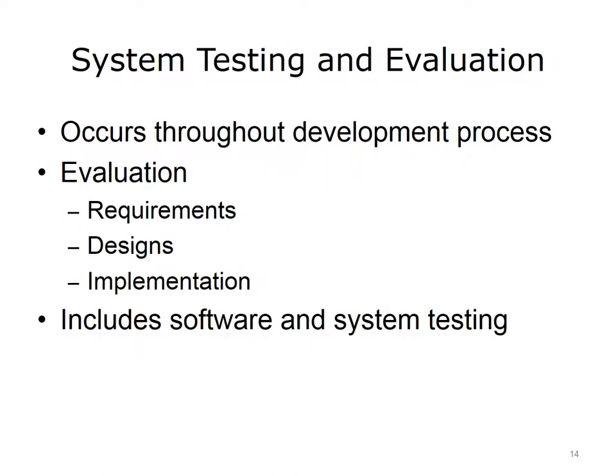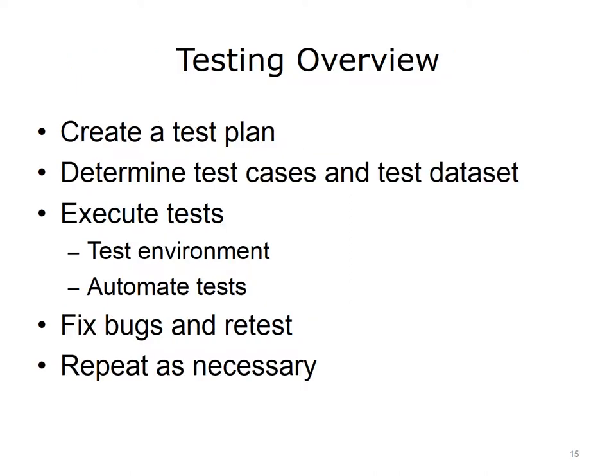Testing and evaluation of an information system's performance occurs throughout all stages of its development. In the beginning, the project is evaluated for feasibility. As the development process continues, requirements are evaluated for completeness and appropriateness. The designs are evaluated using simple prototypes. Most system development methodologies used today require iterative development with repetitive testing and evaluation at each stage. After the system is implemented, the software and the entire system can be tested.